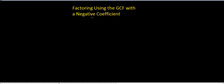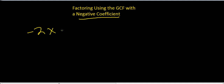Welcome to this presentation where we're going to factor by using the greatest common factor. We're going to factor binomials using the greatest common factor, and we're going to look at binomials that have a negative coefficient. For example, what if we have something like 2x minus 8.